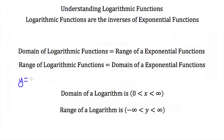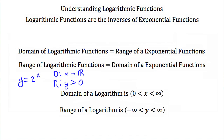So if I had y is equal to 2 to the x, the domain of this function — well, x can be any real number. I could plug in a million for x, I could plug in 2 for x, I could plug in negative a million for x. My range, though — my y values — these all have to be positive. y has to be greater than zero, because there's no value of x I can plug in that will make y zero. If I plugged in negative a million for x, I would get a very small fraction — think of it as y equals 1 over 2 to a million — but there's no value of x that makes this zero, so our range is that y has to be greater than zero.